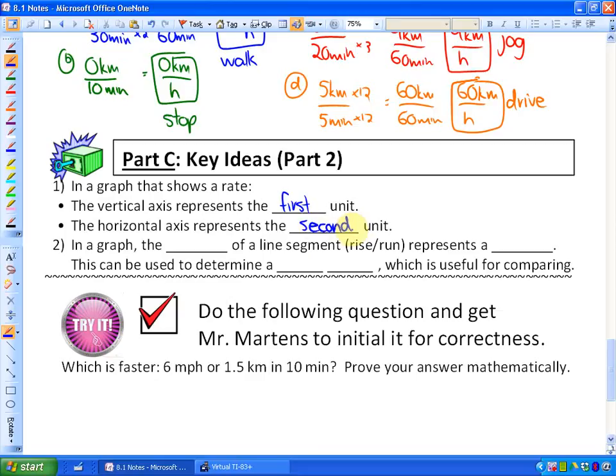And finally, in a graph, the slope of a segment, rise over run, represents a rate. And this can be used to determine a unit rate, which is useful for comparing, which is what we did in the last one. We found out how fast he was going per one kilometer.